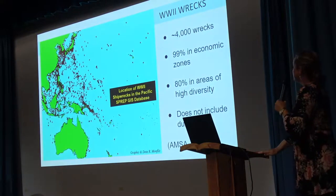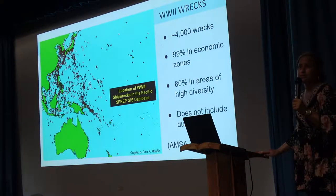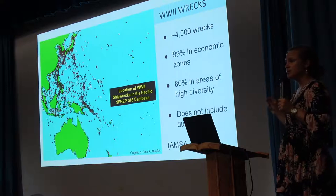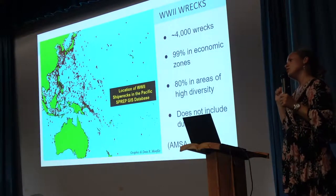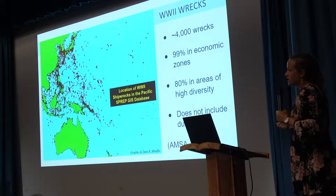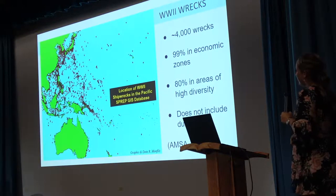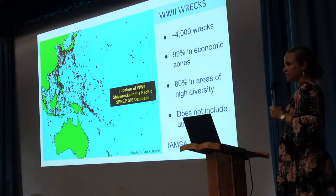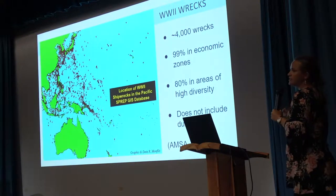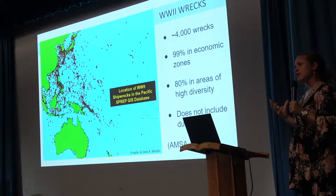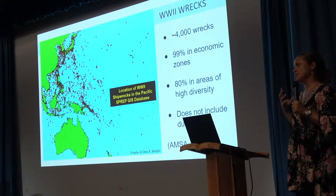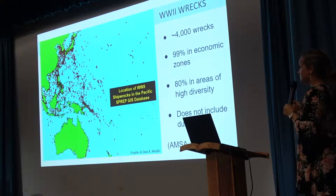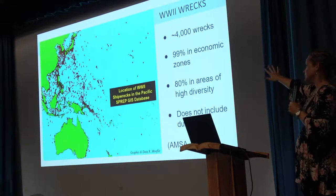Here's a map of World War II wrecks in the Pacific. There are about 4,000 wrecks that we currently know of. 99% of these are in exclusive economic zones — areas close to the coast where people fish for their livelihood, recreate, and where there's commercial boat traffic. Unfortunately, 80% of these sites are in areas of high diversity: coral reef areas, mangroves, and seagrass beds — the lungs of the sea in this region, really important for sustaining species populations in, around, and beyond those sites.